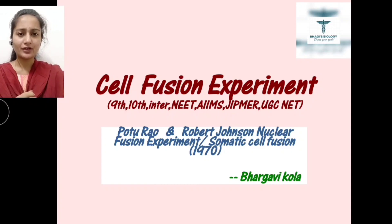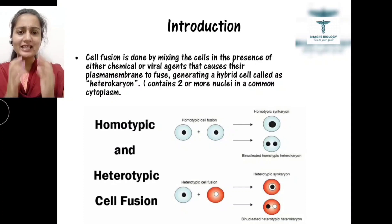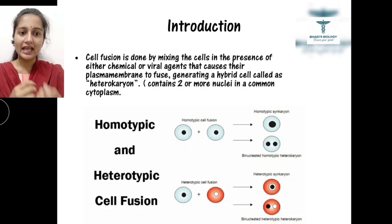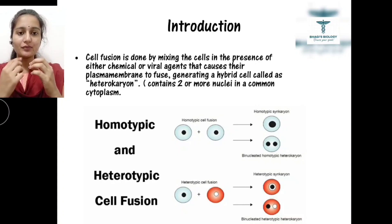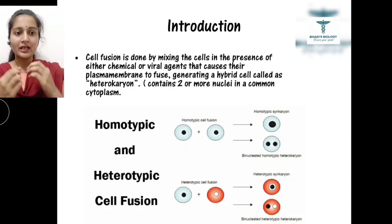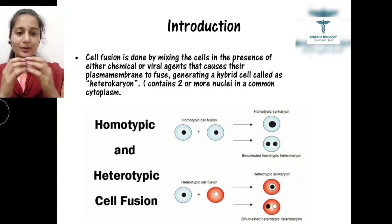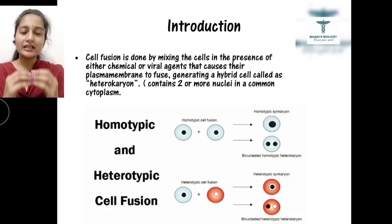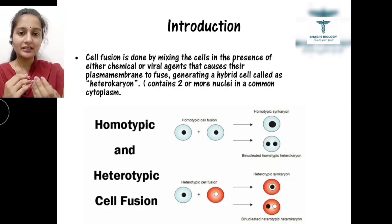Let's have a small introduction: what is meant by cell fusion? Cell fusion is the fusion of two cells. This can be done by mixing cells in the presence of either chemical substances or viral agents that cause their plasma membranes to fuse. The two cells are surrounded by a plasma membrane or cell membrane, and in the presence of these agents, their plasma membranes fuse together along with all cellular contents, organelles, and nuclei.